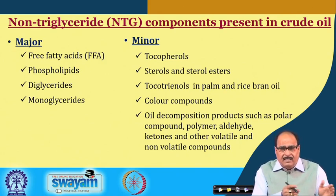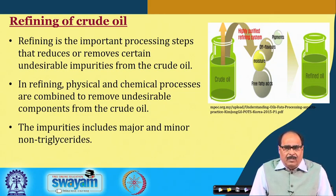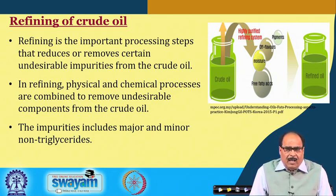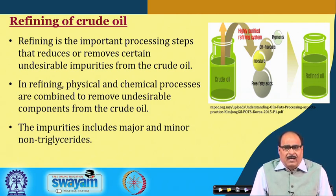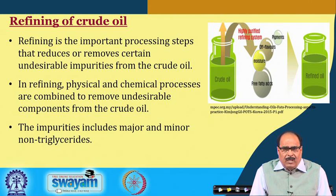Even pigments may also get extracted along with the oil. These non-triglyceride components which are present in the oil should be removed before the oil is sent for further use as edible oil for cooking or frying purposes, or for its conversion into various processed products. So in order to get good quality oil which contains mainly triglycerides, the extracted crude oil is subjected to various processing steps for the removal of non-triglyceride components — these are called refining.